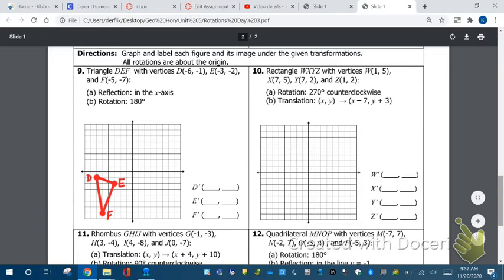Now I'm going to do the first part, which is a reflection. In blue, I'm going to reflect it across the x-axis. This is your x-axis here. Remember, let's look at D. If I'm one square away from the x-axis, my new D is going to be one square on the other side.